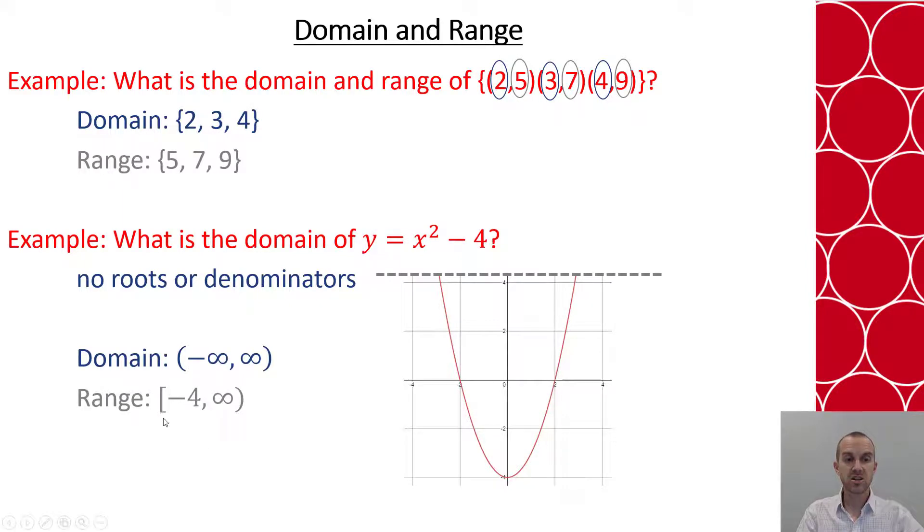Like you would draw little arrows there if you're drawing it personally. And so that means that every value from negative 4 up will be true for the range. In notation, that gets a bracket because negative 4 is included. And you could plug it in to your equation here to verify. And then to positive infinity.